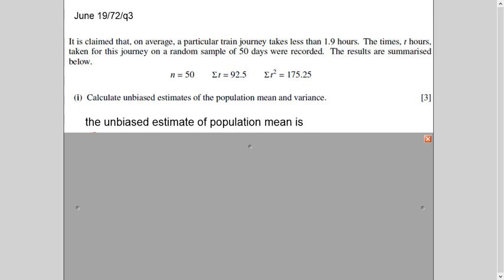So let's begin with this question. It is claimed that on average a particular train journey takes less than 1.9 hours. The times taken for a journey of 50 days were recorded. A random sample of 50 days taken, time is noted when train is arriving, how long it is taking. So the result is summarized here. This is a result of 50 days. So your n is 50 and sigma t is 92.5. So all the hours are added of 50 days and sigma t square is this. Now you have to calculate unbiased estimate of the population mean and variance.